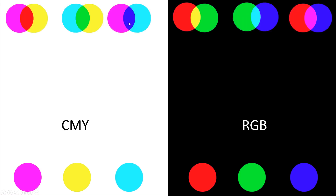Here we see mixing red and green gives us yellow. Mixing green and blue gives us cyan. Mixing red and blue gives us magenta.